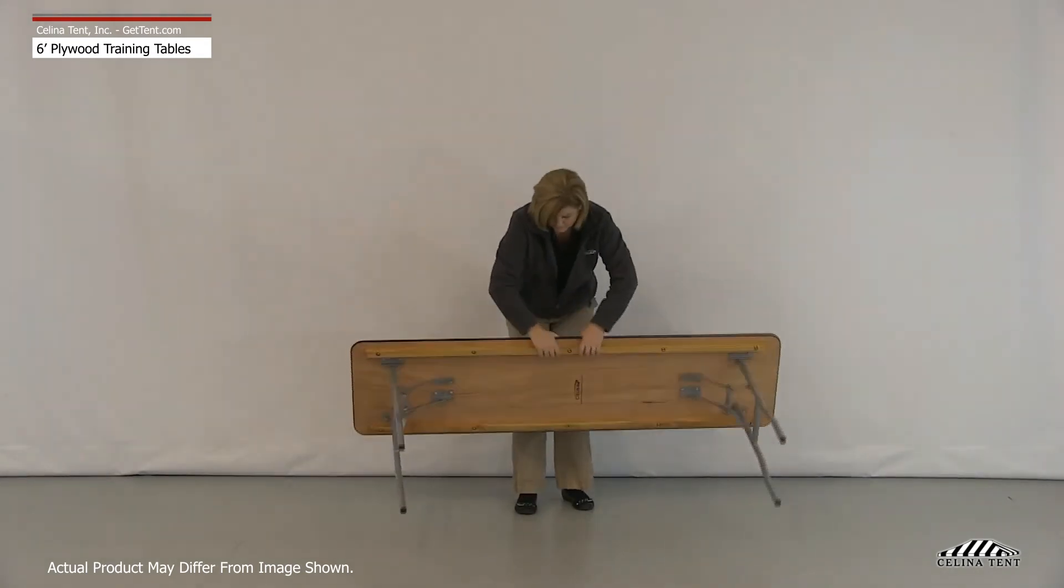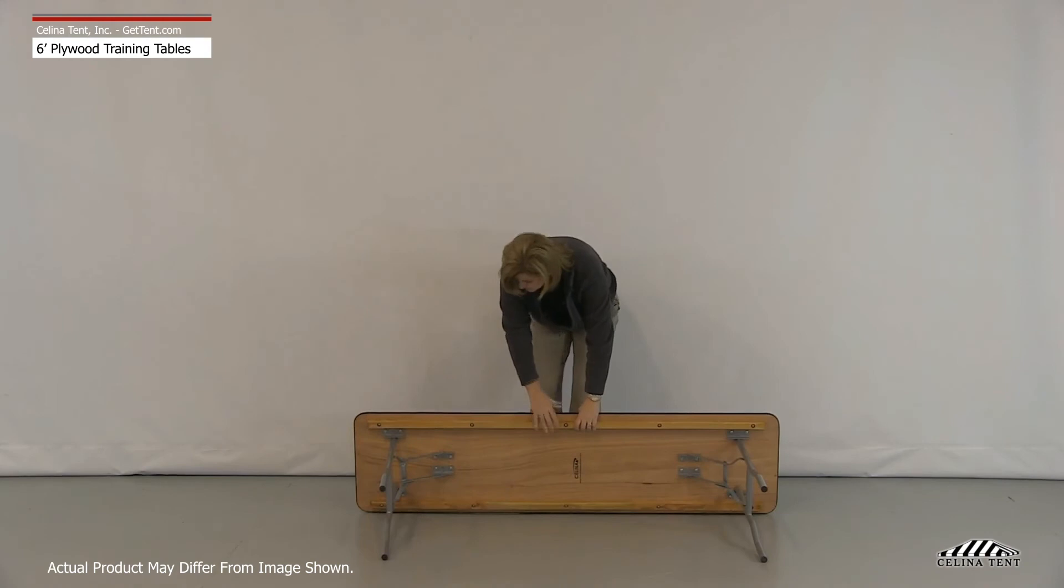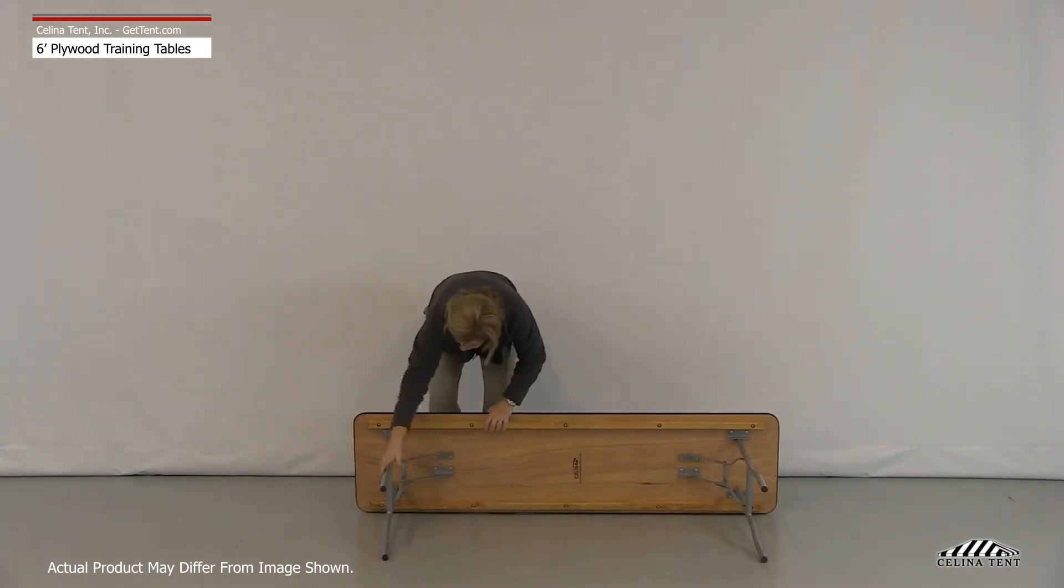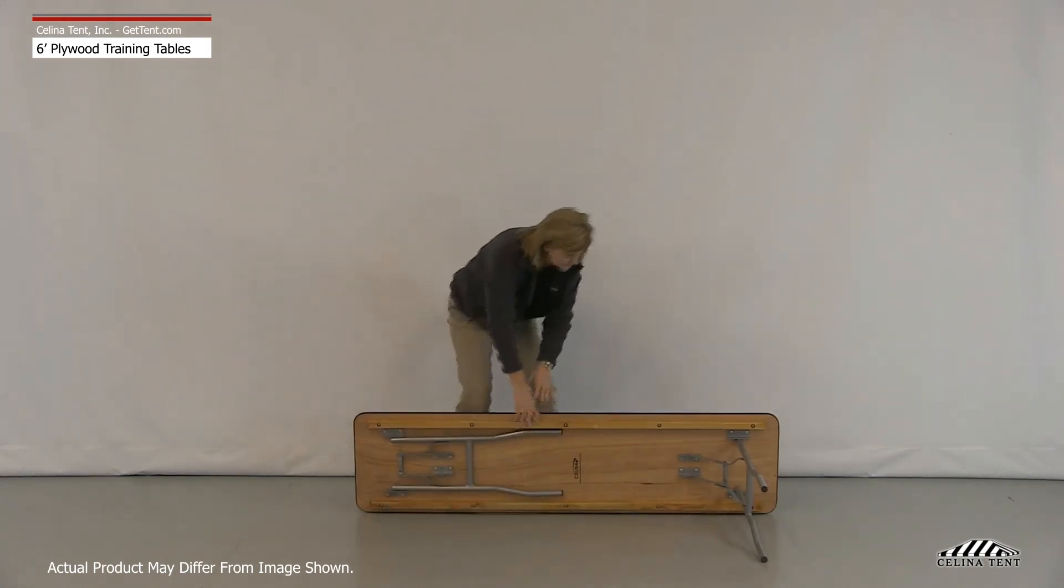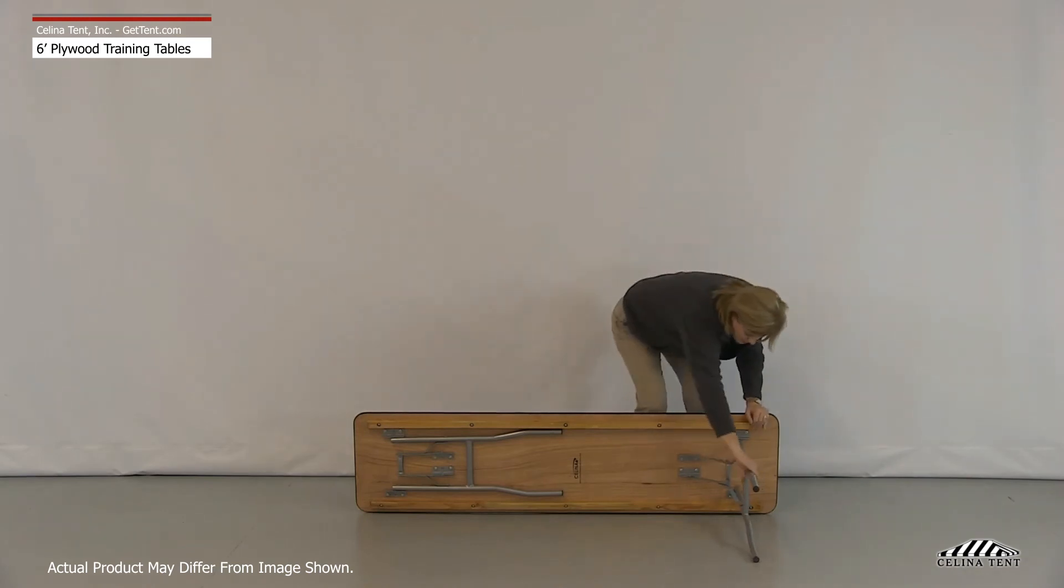For disassembly, set the table on its side and unlock the legs by bending the leg hinges until the dimple lock on the legs uncouples. Fold the legs flat against the underside of the table.